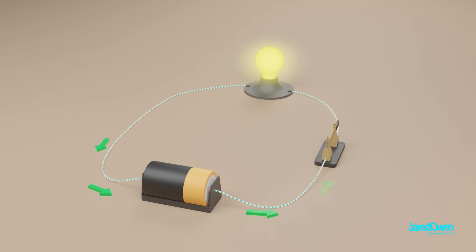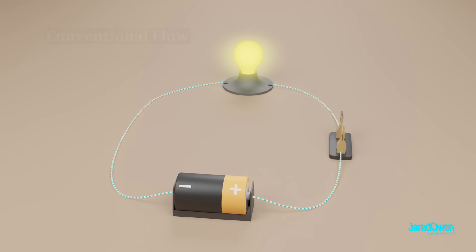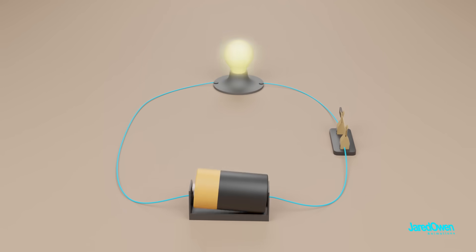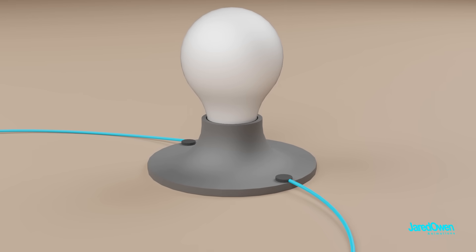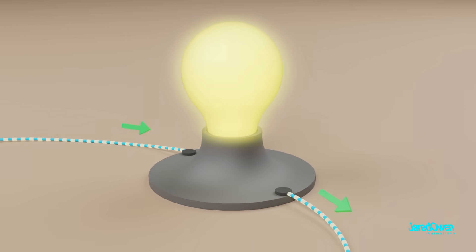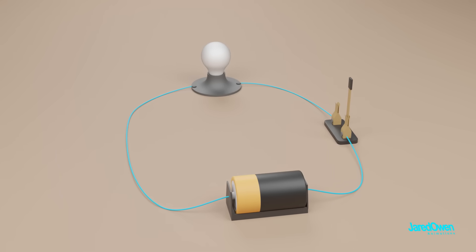Electricity is flowing down the wire. This is called conventional flow. If we take the battery out and flip it, then the current will flow the other way. The light bulb will still work in either case, but there are some devices that will work differently depending on which way the current flows. So that's the basics of a circuit.